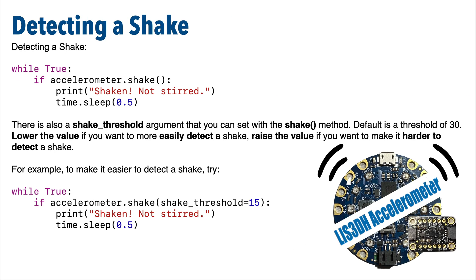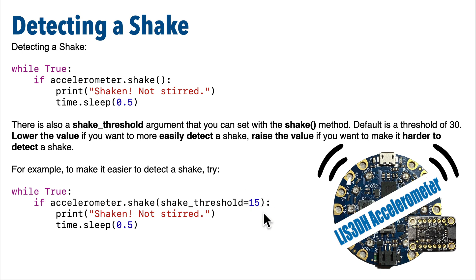All we have to do is use the dot shake method — it returns true if we detect a shake. The default threshold for shake detection is a value of 30, which controls the sensitivity. There's also an optional shake_threshold argument you can pass into the shake method. Set this value lower if you want the sensor to be more sensitive, or increase it to decrease shake detection sensitivity.